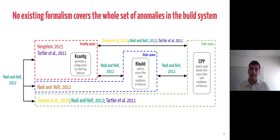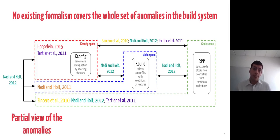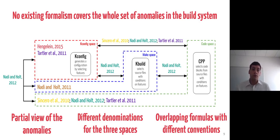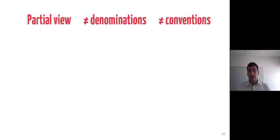Multiple papers have analyzed and formalized these anomalies. However, these formalisms are partial, and each one of them only covers some of the anomalies. Thus, no formalism actually tackles all the different types of anomalies, and this leads to some incoherences. Every paper introduces its own terminology to describe the build system, and since these papers often extend previous work, we encounter overlapping formulas with different conventions. These incoherences and this absence of a unified model prevent a fine-grained understanding of the Linux build system, preventing the reuse of these elements on other similar build systems.